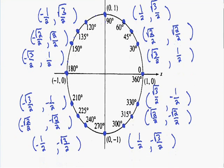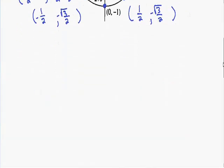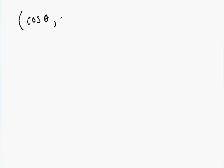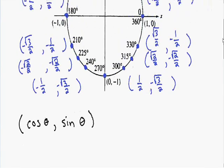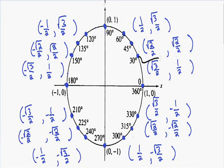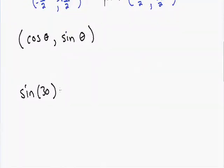Why did we label all these coordinates? We can use them to find the sine or cosine of any angle. The x-coordinate is always equal to the cosine of the angle theta, and the y-coordinate is equal to the sine of the angle theta. For example, the sine of 30 degrees equals the y-coordinate at 30 degrees, which is one-half. And since 30 degrees equals pi over 6 radians, the sine of pi over 6 is also one-half.